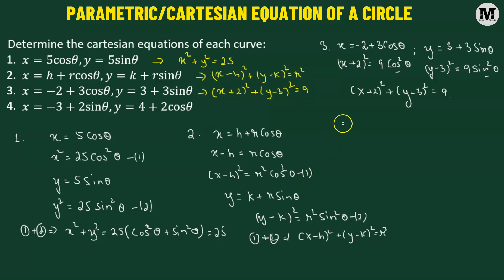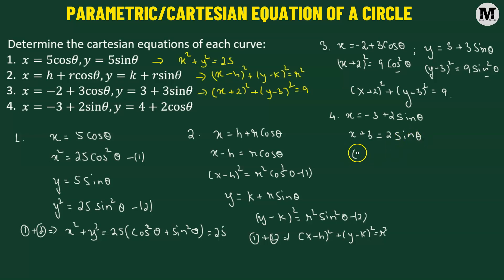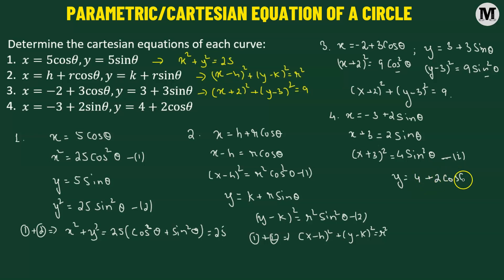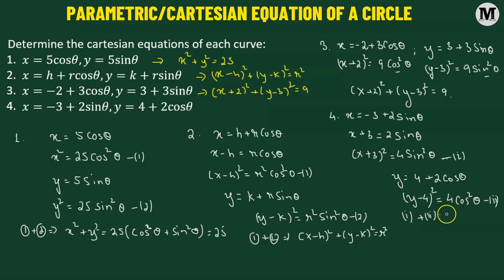For the fourth and final problem, we have x equals negative 3 plus 2 sine theta. This can be rewritten as x plus 3 equals 2 sine theta. Squaring both sides gives x plus 3 whole squared equals 4 sine squared theta — equation 1. Then y equals 4 plus 2 cosine theta gives y minus 4 whole squared equals 4 cosine squared theta — equation 2. Adding equations 1 and 2 gives x plus 3 whole squared plus y minus 4 whole squared equals 4.